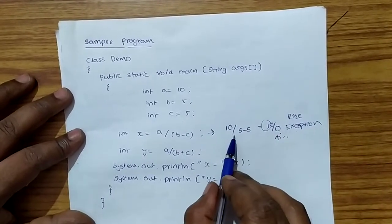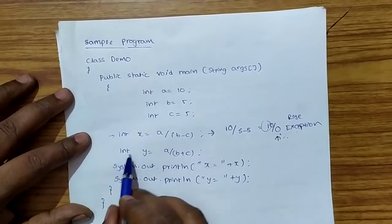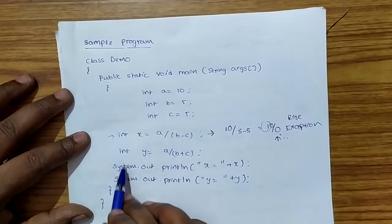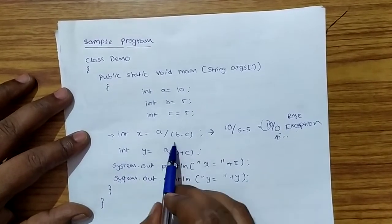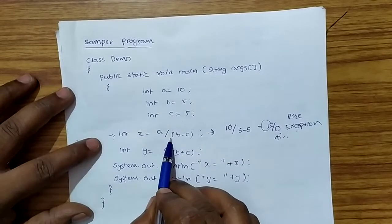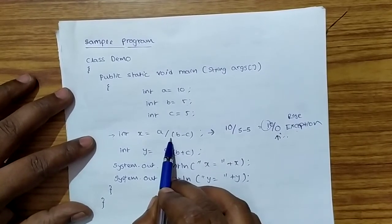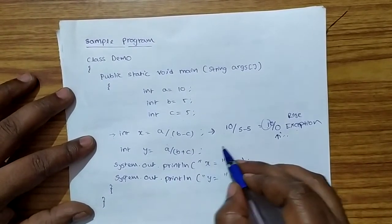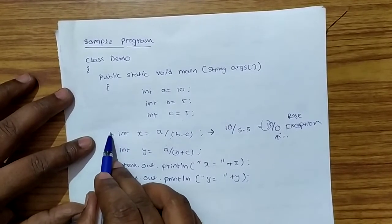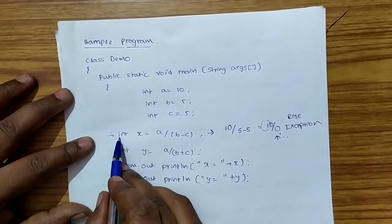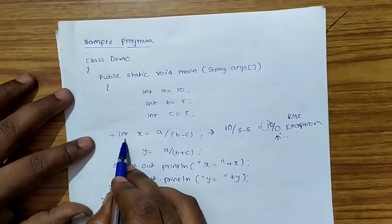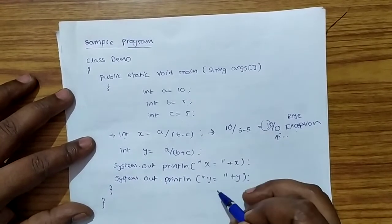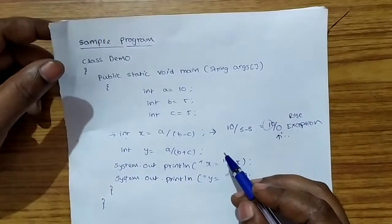When there is an exception in that particular line, automatically the program stops its execution there, even though I have written the remaining lines very correctly. Because Java is an interpreted language and executes line by line, the program cannot execute the remaining lines. To avoid this problem, we have the exception handling mechanism.